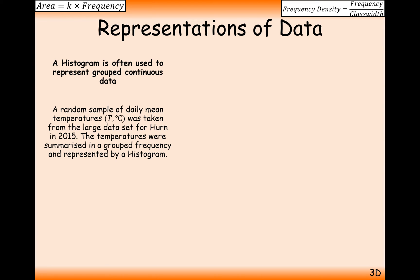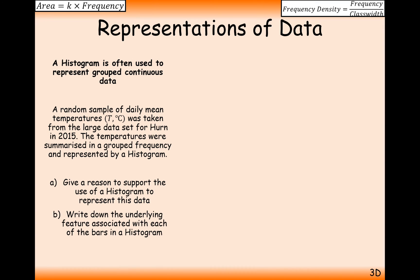So another histogram question here. A random sample of daily mean temperatures was taken from a large data set for Hearn in 2015. The temperatures were summarized in grouped frequency and represented by a histogram. Give a reason to support the use of a histogram to represent this data. And write down the underlying feature associated with each of the bars in a histogram. So give a reason to support the use of a histogram. Since temperatures are continuous and the data is already in groups, a histogram here is appropriate.